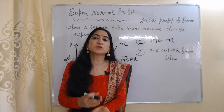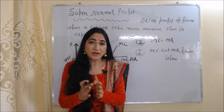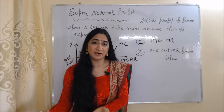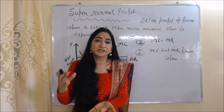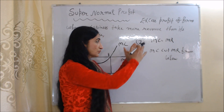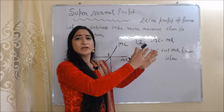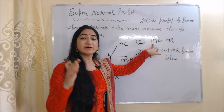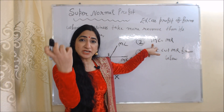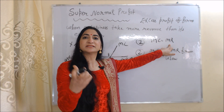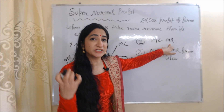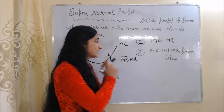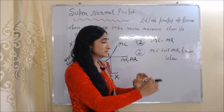One important thing to keep in mind: in order to get equilibrium under a perfect competition market, two conditions must be satisfied, and these two conditions remain the same in all equilibrium cases. The first condition is MC equal to MR — MC is marginal cost, the cost of producing one additional unit, and MR is marginal revenue, the income from selling one additional unit.